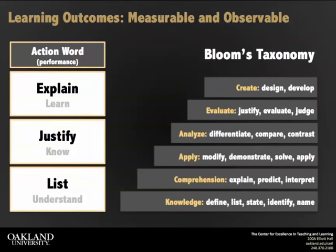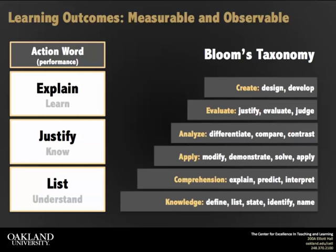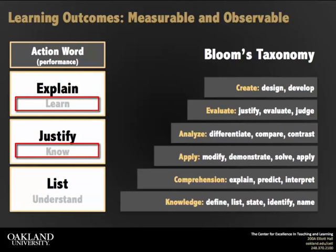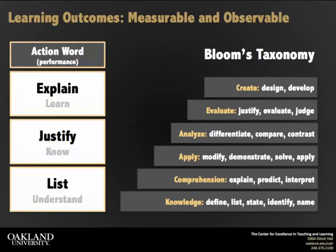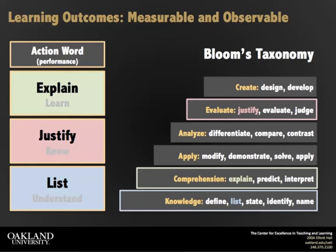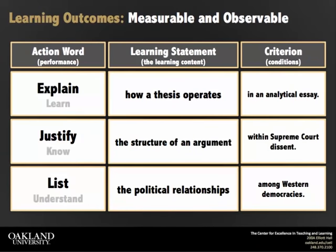Bloom has developed a list of actions that express the learning level associated with outcomes. Lower level learning outcomes might call on students to define and state, or explain and modify, while higher level outcomes require students to compare, justify, or design. This is another reason why action words are important to learning outcomes. With unobservable words like learn and know, it isn't clear what level of learning is expected. Returning to our original examples, any of the original, poorly written outcomes could be defined in terms of novice or expert learning. The action words help distinguish the difference.